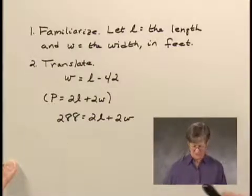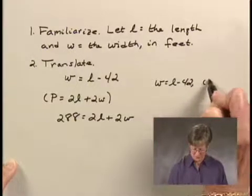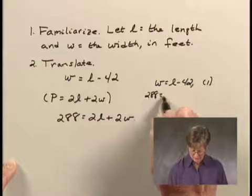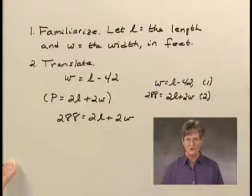So now we have a system of equations. W equals L minus 42, and let's call that equation 1. And 288 equals 2 times the length plus 2 times the width, and let's call that equation 2.